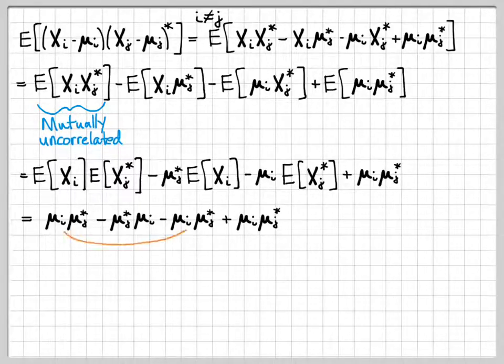Now let's look at this. Two of these terms, these two, μi μj star minus μi μj star, those perfectly cancel. Similarly, these two terms perfectly cancel. So when I'm all said and done for i not equal to j, what I end up with actually is a zero vector.